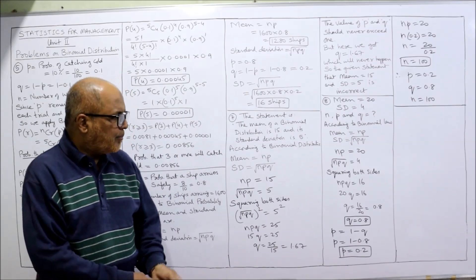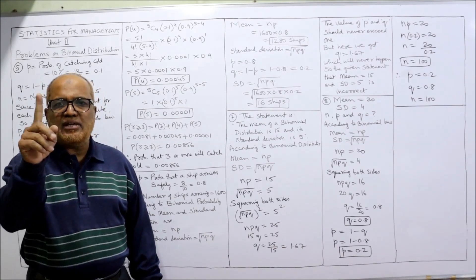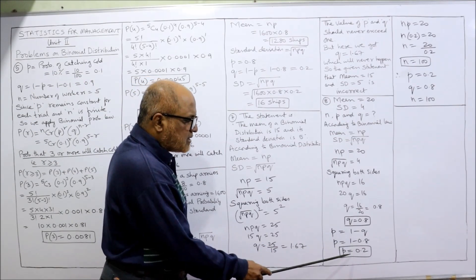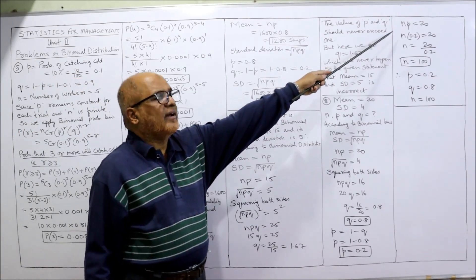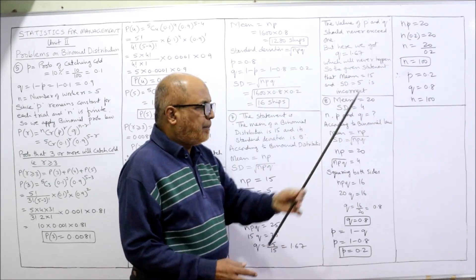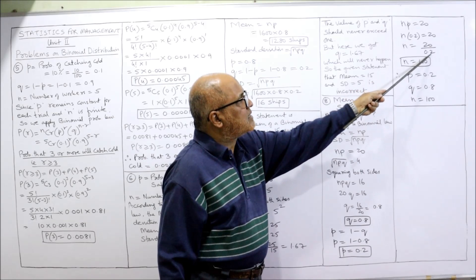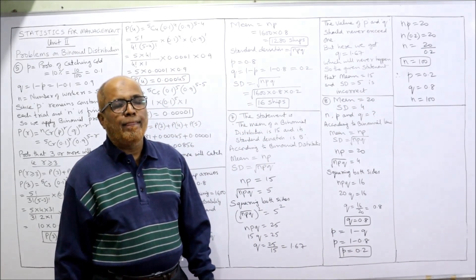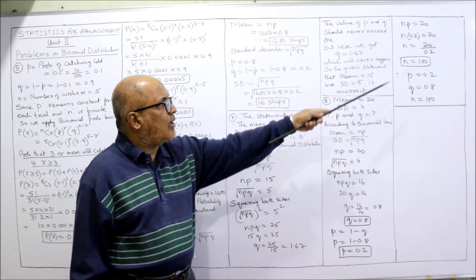We got Q = 0.8. Since P + Q = 1, P = 1 − Q = 1 − 0.8 = 0.2. To find N, we use NP = 20. Since P = 0.2, N × 0.2 = 20, so N = 20/0.2 = 100. Finally, N = 100, P = 0.2, Q = 0.8.